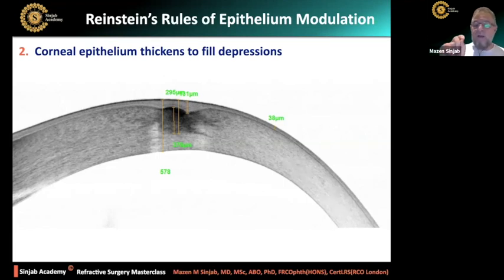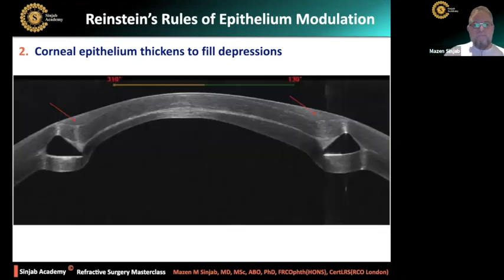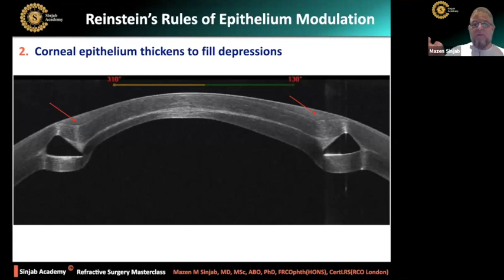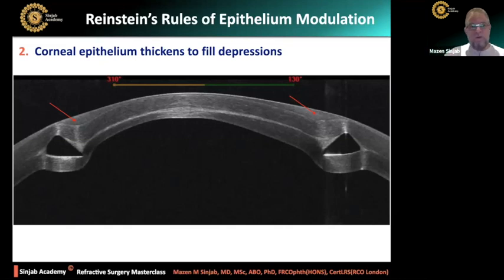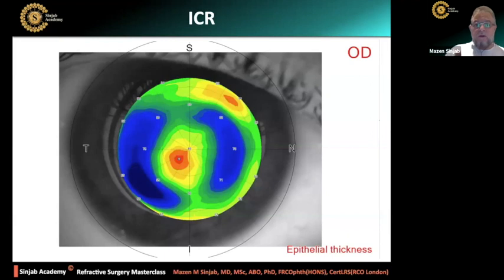This is corneal irregularity because of a scar. Look at the epithelium — how it changes its thickness in order to create a homogeneous anterior surface of the cornea. This is the filling effect, or the modeling effect. After intracorneal ring implantation, look at the very thick epithelium just above the rings in order to smoothen the anterior corneal surface.